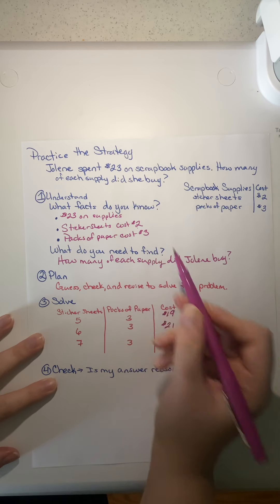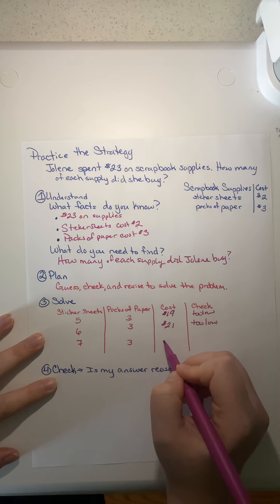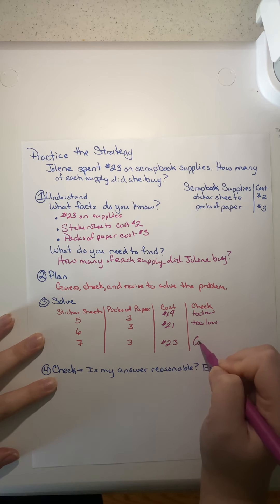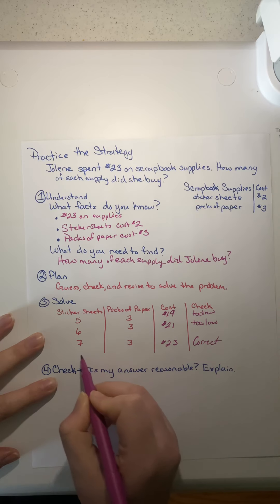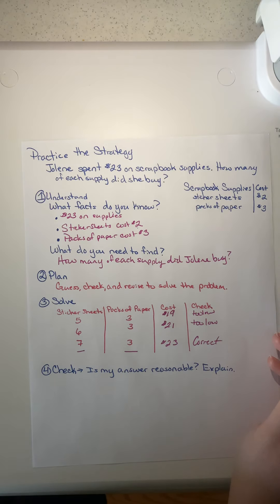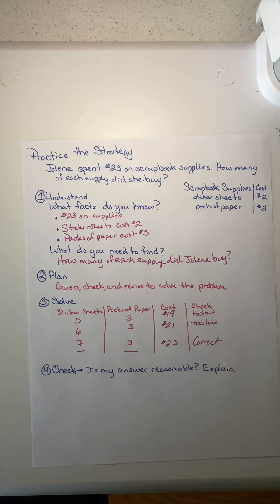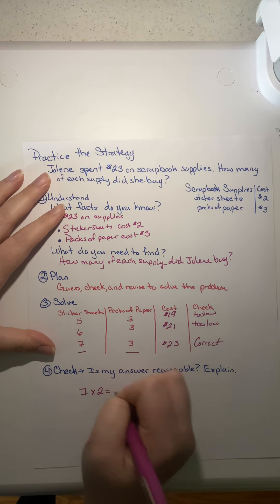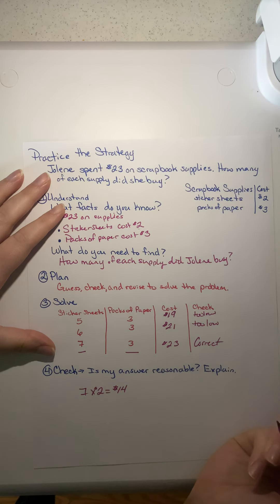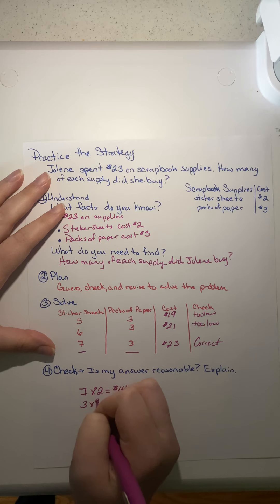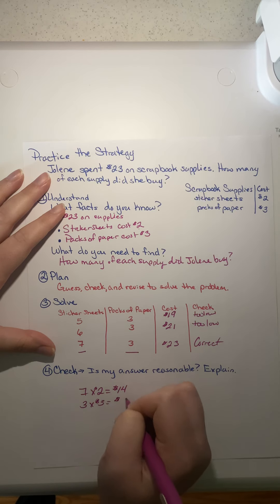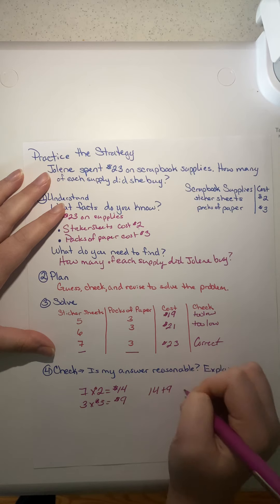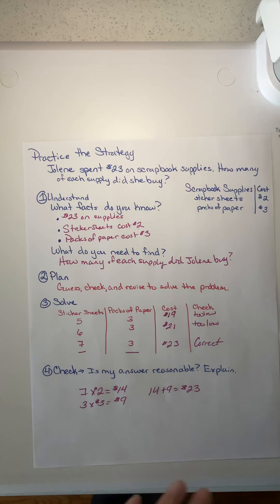What about seven? Seven times two is $14. Three times three is $9. Add those together and it's $23. There we go — seven sticker sheets and three packs of paper. Let's check it: seven times two equals $14, and three times three equals $9. Add those together and it equals $23. If you went backwards, it should equal the same amount.